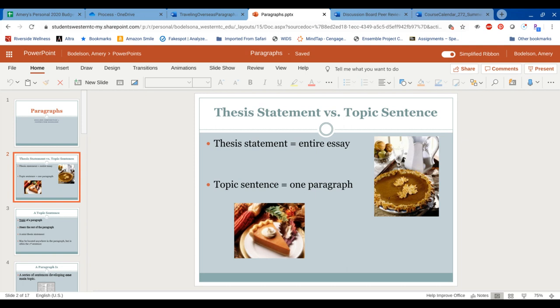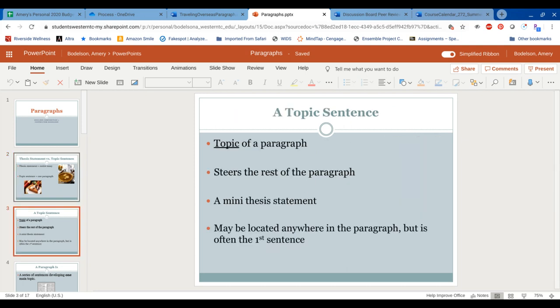Whereas a topic sentence is in each of the body paragraphs that you write. You can think of a topic sentence like a mini thesis. So each paragraph has its own little structure, and the first sentence is usually your topic sentence. It's what the paragraph is about, and the rest of the paragraph builds around that. But they all go back to support the overall thesis. So every essay has one thesis, but every essay has multiple topic sentences because it has multiple paragraphs.